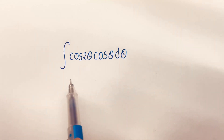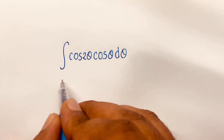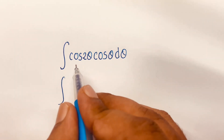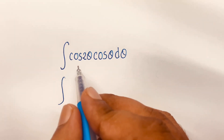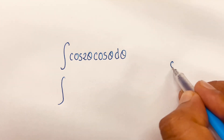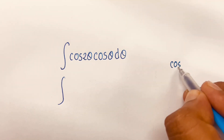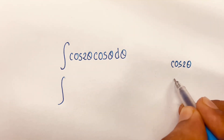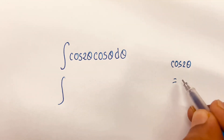How to solve the integral of cos(2θ)·cos(θ) dθ. I'll solve this question using the integral of cos(2θ) and the trigonometric rules we know.